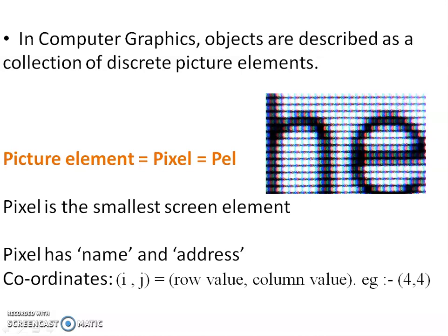A pixel has its own name and address. Its address is indicated by its coordinates. For example, i,j is the coordinate where i is the row value and j is the column value. For example, 4,4 represents a picture value of x coordinate 4 and y value 4.